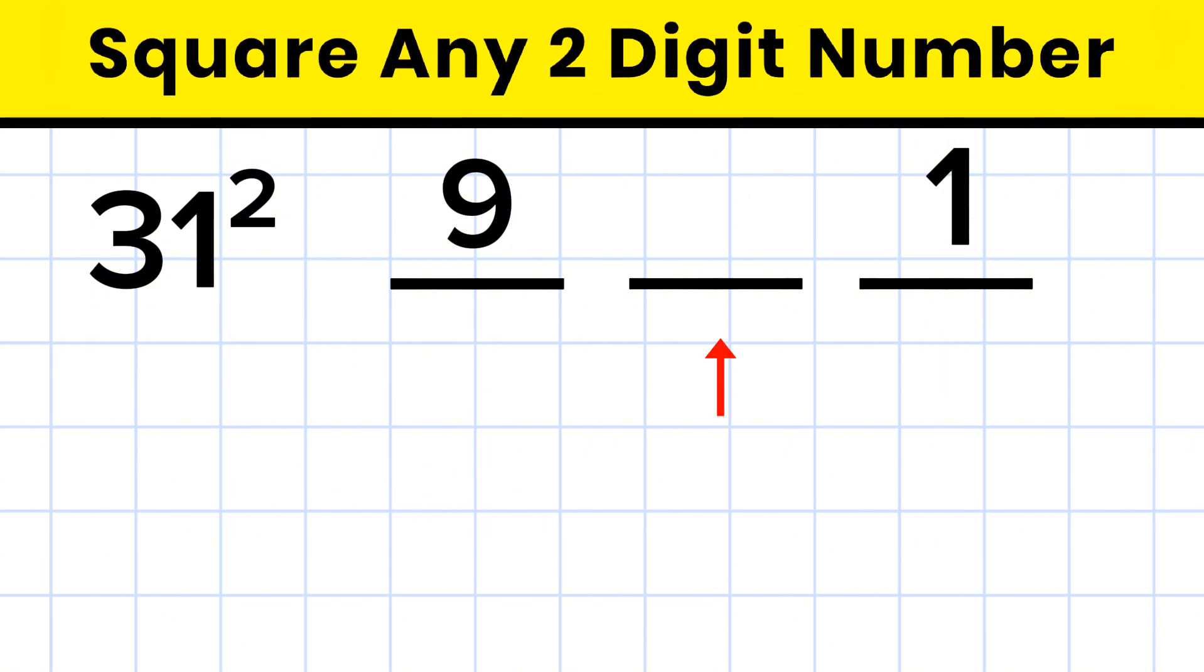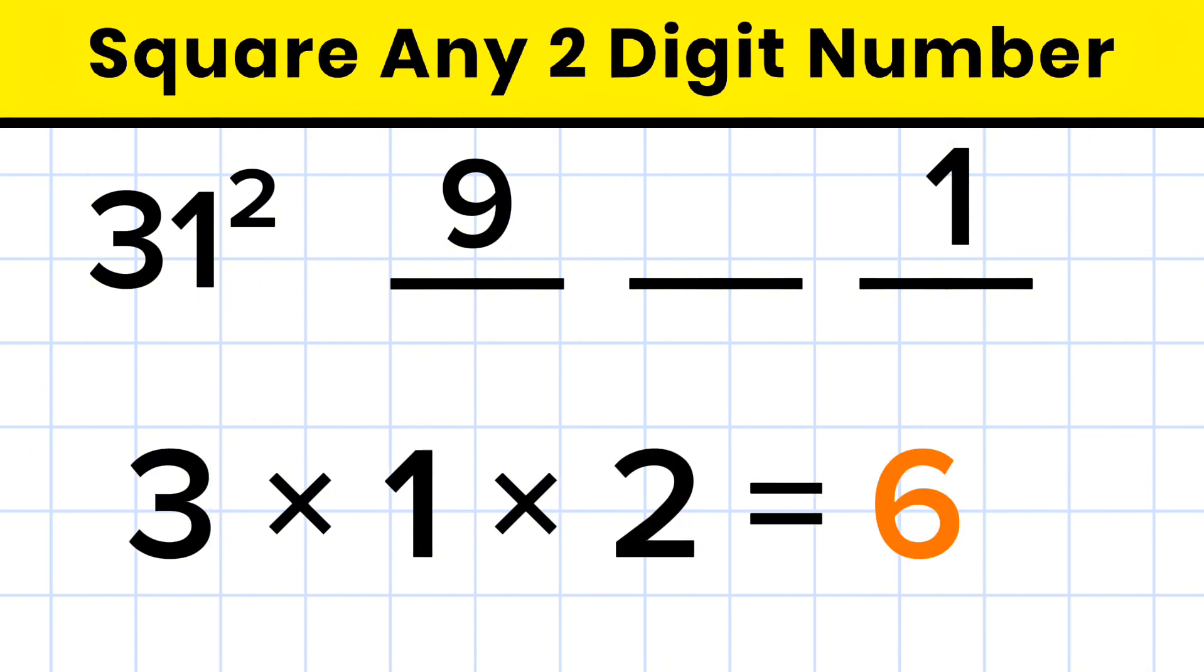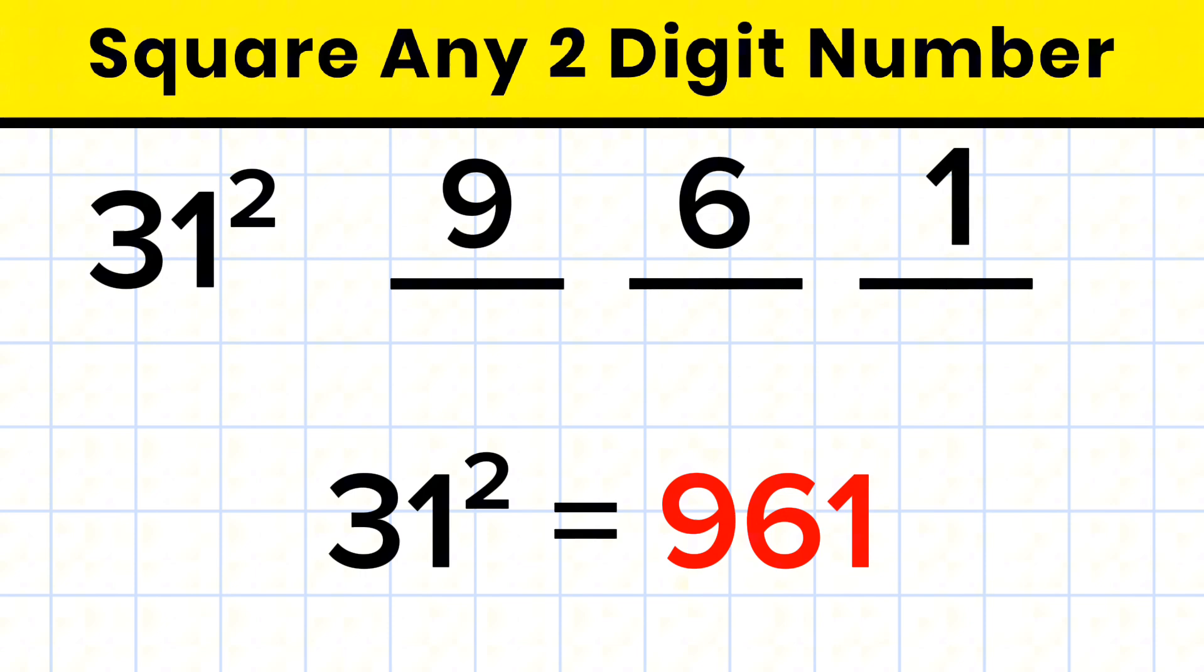multiply the two digits, that is 3 times 1 and then double it. It means 3 times 2 equals 6. Now write this 6 in the middle. So the final answer is 961.